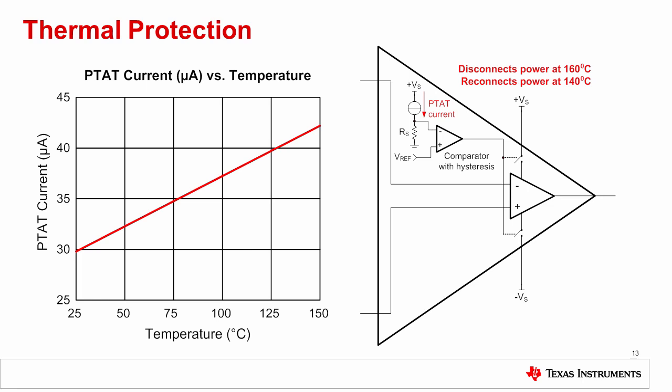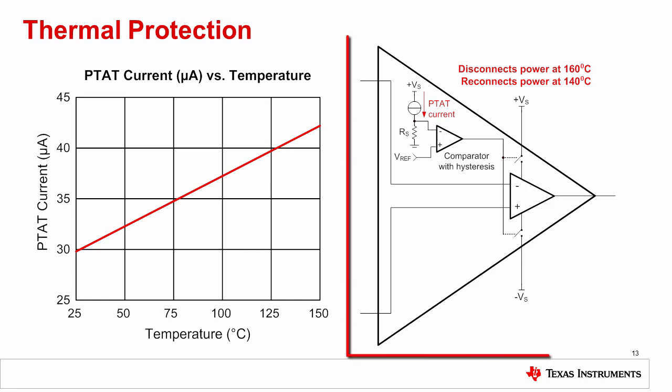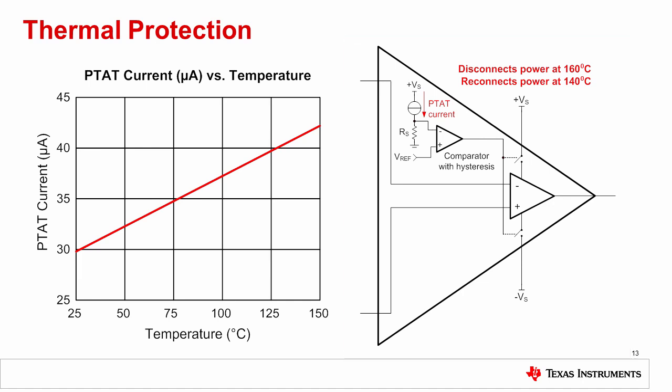Disconnecting internal power drops the internal power dissipation to zero, stopping the self-heating. The device will resume normal operation once the junction temperature crosses a lower threshold of 140 degrees C. This means that in cases where the internal power dissipation is too high, the thermal protection will turn on and off periodically as the device self-heats and then cools. Of course, it is advisable to avoid going into thermal protection if possible. The drawing on the right shows a simplified implementation of a thermal protection scheme. A reference voltage that is proportional to absolute temperature, called PTAT, is compared with a reference that is constant over temperature. This comparison is done using a comparator with hysteresis such that the device is disconnected from power at 160 degrees C and reconnected at 140 degrees C. Keep in mind that the implementation can vary from device to device. Also keep in mind that thermal protection can prevent damage due to internal device self-heating. It cannot protect the device if the ambient temperature exceeds the absolute maximum rating.